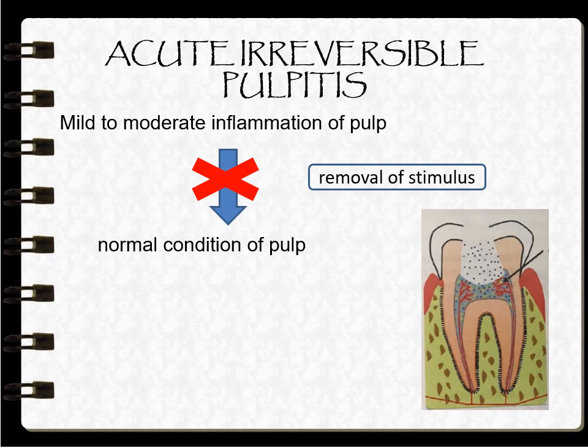Next is irreversible pulpitis, which has two types: acute and chronic. In acute irreversible pulpitis, even after removal of the stimulus, the mild to moderate inflammation of the pulp does not return to normal condition.